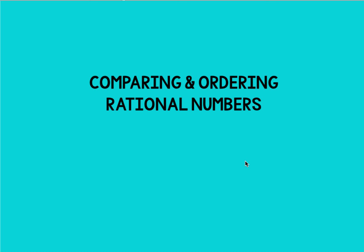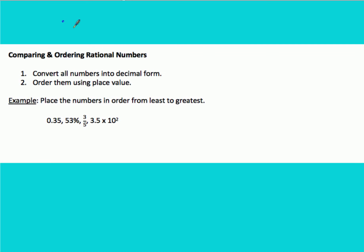Now that you know how to change all of the types of rational numbers into decimals, we're going to practice comparing and ordering these rational numbers. If you're given a list of rational numbers, you want to first convert all the numbers into decimal form. Once they're in decimal form, it'll be really easy to order them by their place value. That's going to be our strategy for each of these problems.